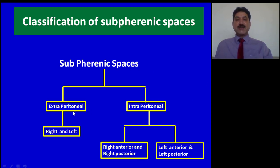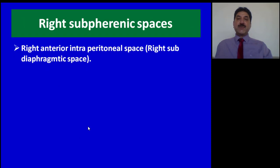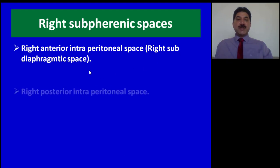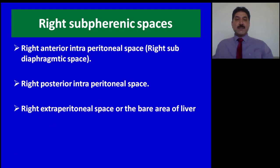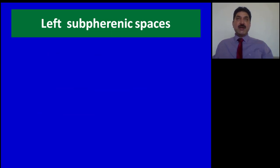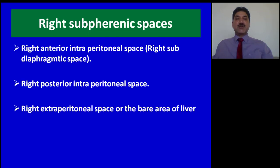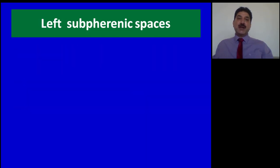Classification of subphrenic spaces: subphrenic spaces are divided into extraperitoneal and intraperitoneal. Intraperitoneal are further subdivided into right anterior and right posterior, and left anterior and left posterior. Extraperitoneal spaces are subdivided into right and left. The right anterior intraperitoneal space is also called the right subdiaphragmatic space. The right posterior intraperitoneal space is also called Morrison's pouch. The right extraperitoneal space is also called the bare area of the liver — the largest bare area.